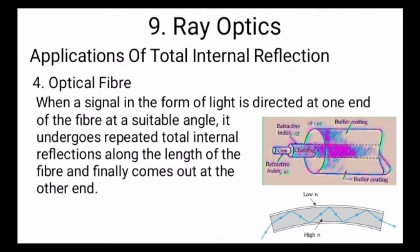When a signal in the form of light is directed at one end of the fiber at a suitable angle, it undergoes repeated total internal reflections along the length of the fiber and finally comes out at the other end, as you can see in this diagram.